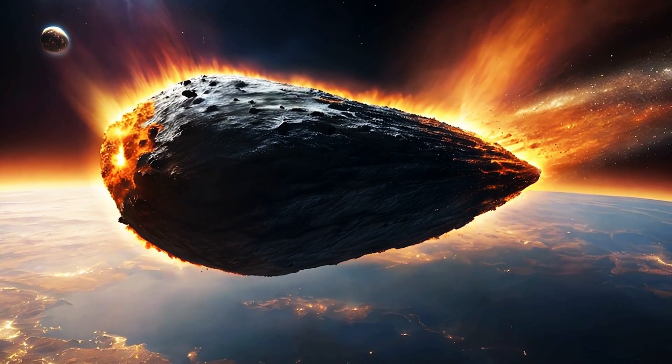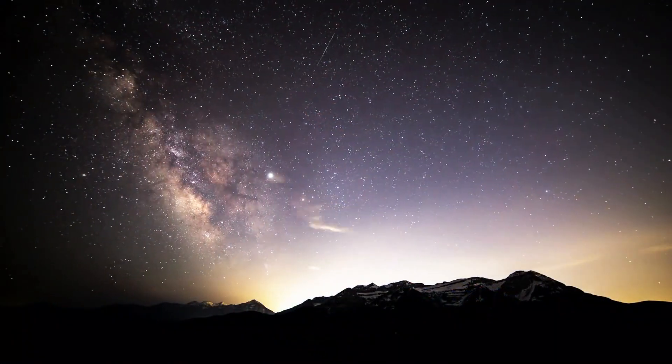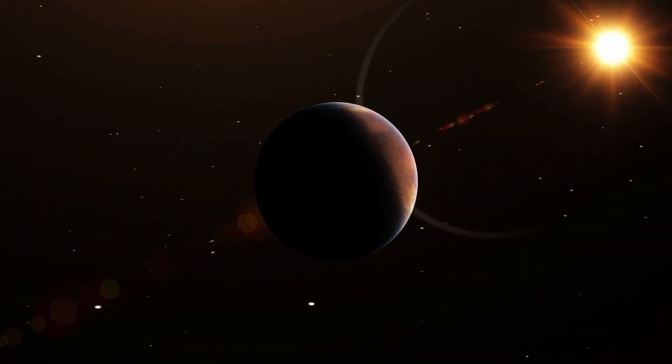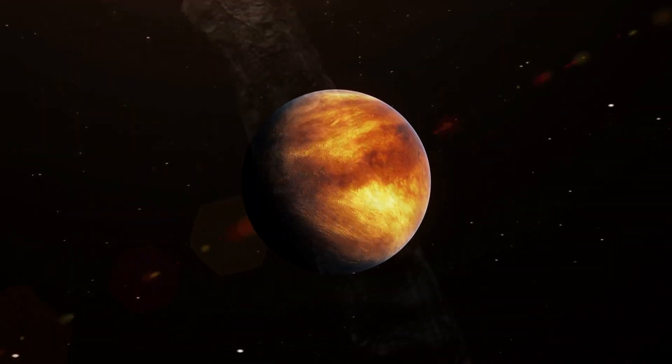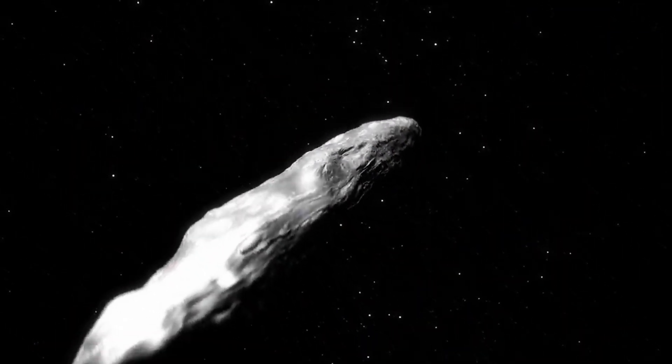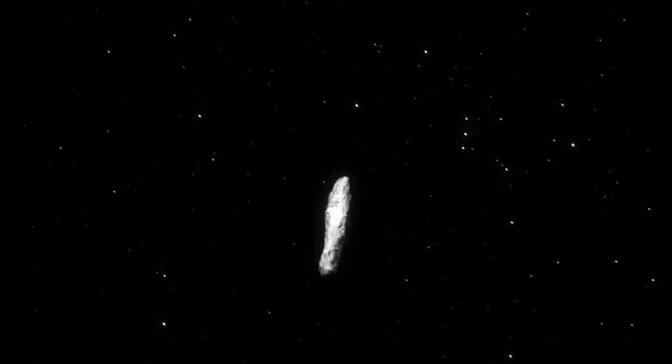One of the most fascinating theories regarding the origin of Oumuamua suggests it may be the result of a catastrophic event: a planet shattered by a massive star or black hole. Such a disaster could stretch and distort fragments of the planet, forming objects like Oumuamua. If this theory is correct, Oumuamua is not just a traveler but a relic of a lost world, carrying the marks of its violent past.